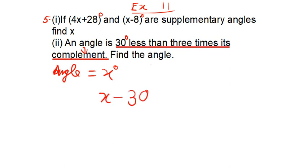3 times its complement means multiply this thing by 3, so put this in brackets, and outside of it 3. And we already know that this word complement is telling us that their sum, the sum of the complement and this 30 degree less than 3 times its complement is 90 degrees. So is equal to 90 degrees, now we will simply solve this.